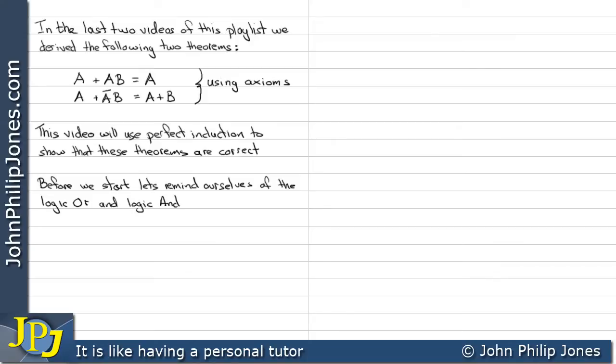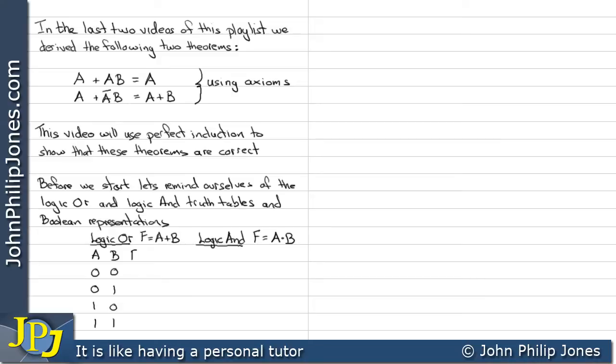let's remind ourselves of the logic OR and logic AND truth tables and Boolean representation. Logic OR is F equals A or B, and AND is F equals A and B. Here we can see the truth tables for both.